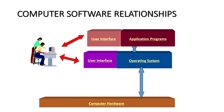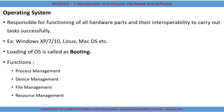Now we'll see what exactly is an operating system. By the name, we can say an operating system is used to operate the computer or the system. It is responsible for the functioning of all hardware parts and their interoperability to carry out tasks successfully. Different operating systems available include Windows 7, Windows 8, Windows 10, Linux, and Mac OS.